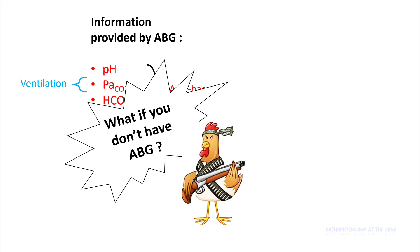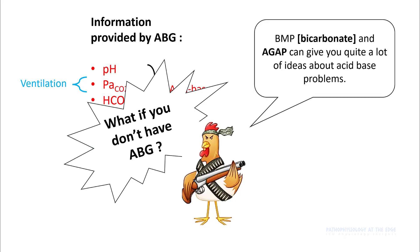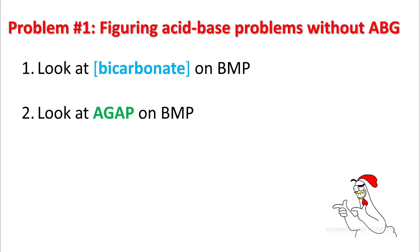What should you do if you don't have an ABG available to you? You can look at your basic chemistry — the level of bicarb and anion gap — and these two numbers can give you quite a fair idea about acid-base problems. Let's try to understand this in more detail, trying to figure out the acid-base problems without ABG.